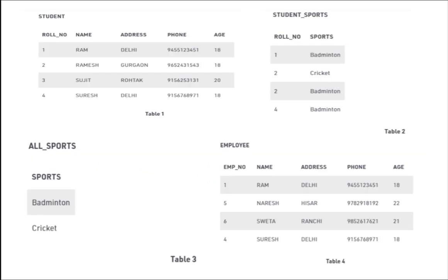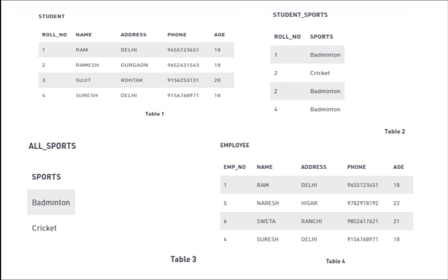To explain the different types of joins, I'm considering four tables: first is a student table, second is a student sports table, third is an all sports table, and fourth is an employee table. I'll use these four tables to explain different variations of join with respect to relational algebra.